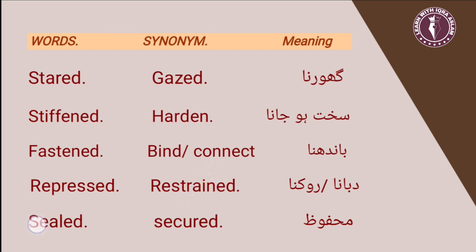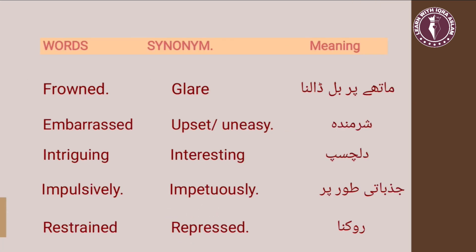Next word is 'sealed.' Sealed ka matlab hai mehfooz banana — jis tarha chapter mein description di hui hai box ki, ki usko tape ke saath seal kiya gaya ya mehfooz kiya gaya. Aur iska synonym hai 'secured.' Next word is 'frowned.' Frowned ka matlab hai maathay par bal daalna, aur iska synonym hai 'glare.'